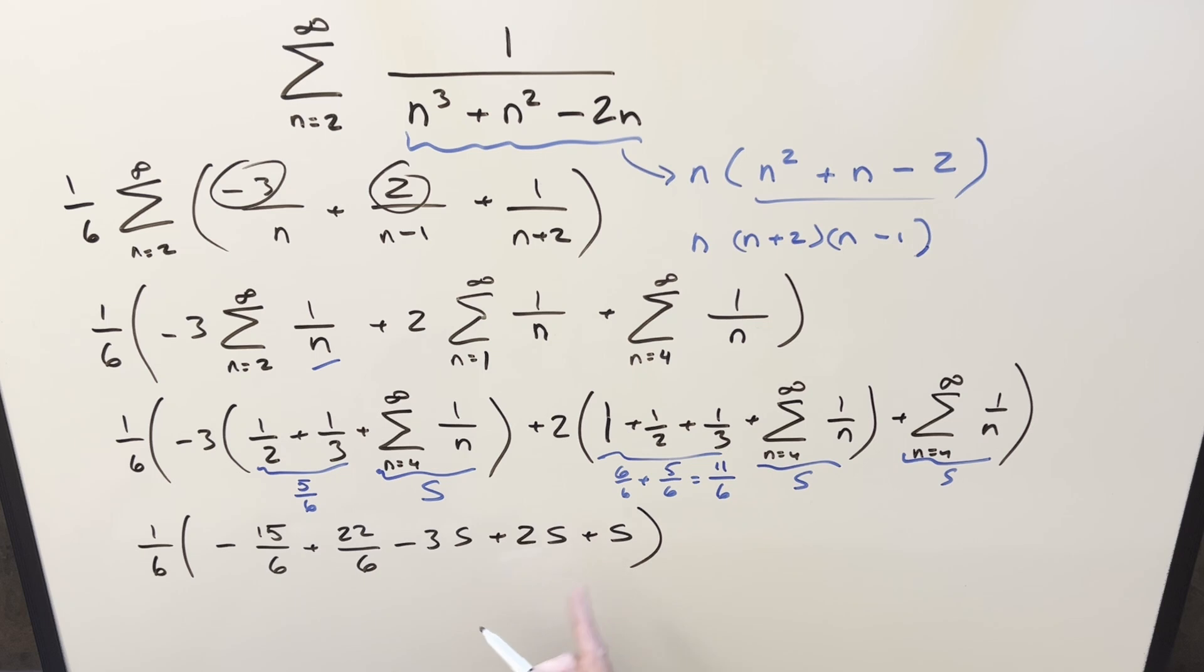We've got the 1 6th in front. 22 over 6 minus 15 over 6 is 7 over 6. Multiply it together. For my final solution, we just get 7 over 36. And that's it.